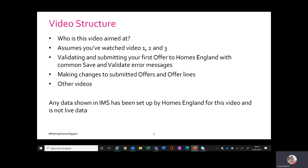I'm going to assume that you've watched the first three videos, or certainly videos one and two. Video three is about inputting an indicative offer line, which some of you may not be intending to do because you're not planning on doing empty homes or hold schemes — the only ones that can be input as indicative. This video will look at validating and submitting your first offer to Homes England, covering common save and validate error messages, and also making changes to submitted offers and offer lines. I'll also look at what you will do later to submit once you have an approved offer in IMS.